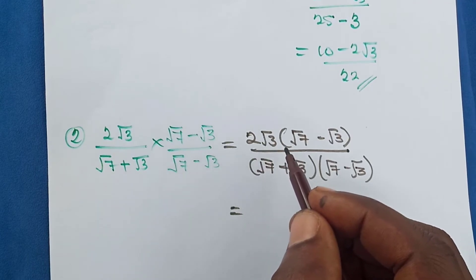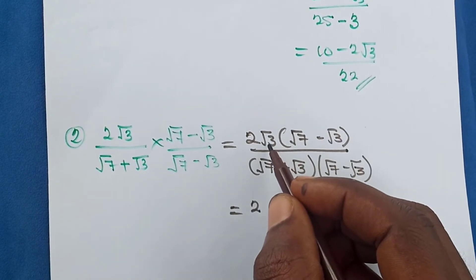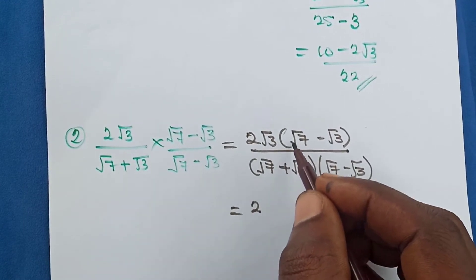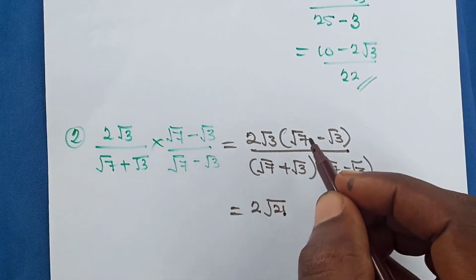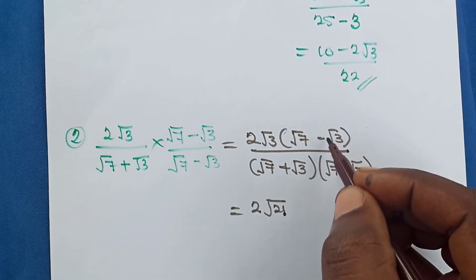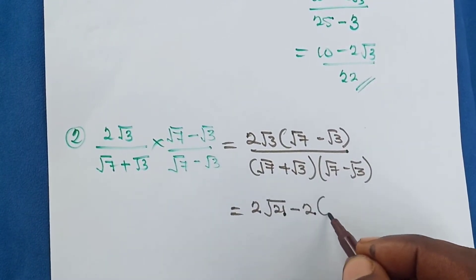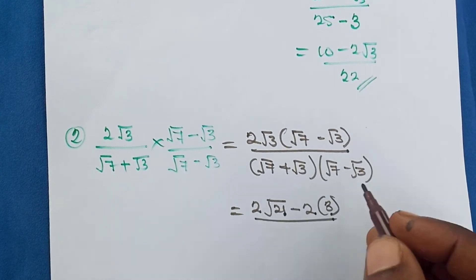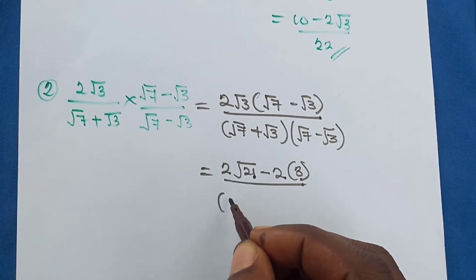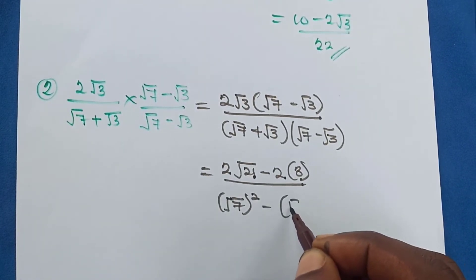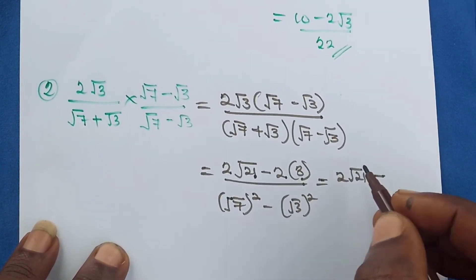So 2√3 multiplied by √7 — there is a hidden 1 here — the 2 multiplies the 1, giving 2, and √3 multiplies √7, so the radicands multiply: 3 times 7 gives us 2√21. Then 2√3 times negative √3 — there is a hidden 1 — so 2 times negative 1 gives negative 2, and √3 times √3 gives 3. All over — using the identity — we have √7 squared minus √3 squared.